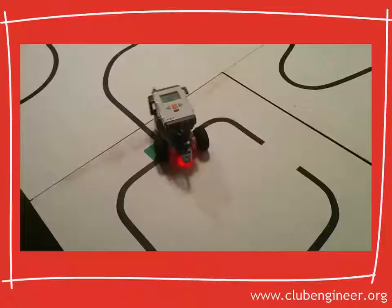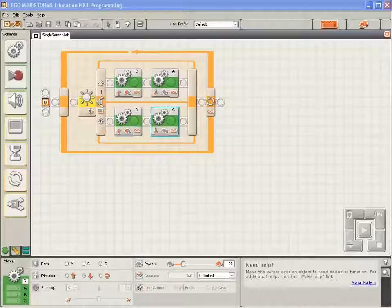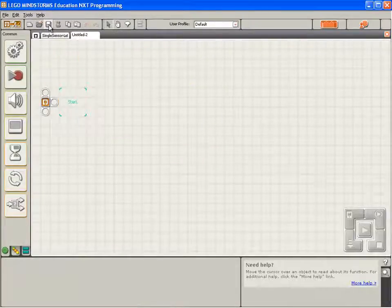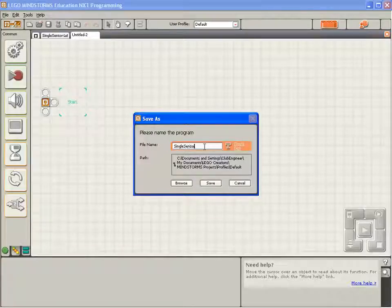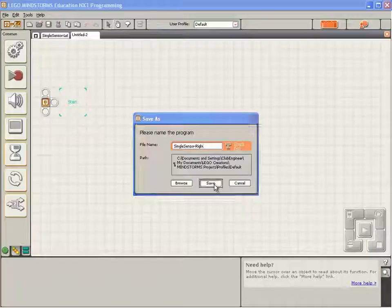What we need now is a single sensor line following program that will stick to the right hand side of the line. So, start off with another new program. We'll save it. We'll call this one single sensor right. Single sensor hyphen right. And click save.